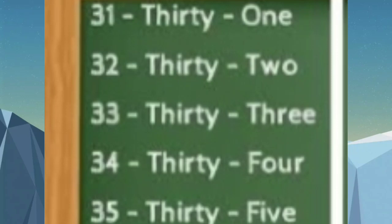What is the spelling of 30? T-H-I-R-T-Y — 30. Then, O-N-E — 1. 31. Then 32: T-H-I-R-T-Y — 30, T-H-R-E-E — wait, T-W-O — 2. 32. Then 33: T-H-I-R-T-Y — 30, T-H-R-E-E — 3. 33.